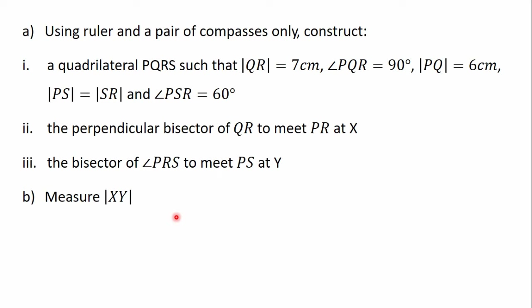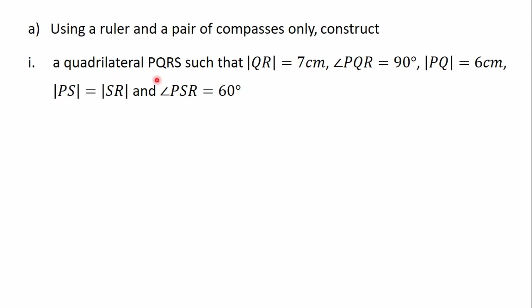To understand how to go about this construction clearly, let's begin by making a freehand sketch of the quadrilateral. We have been given all this information about the quadrilateral PQRS. We have learned that you have to select one of the sides to be the base. I am going to select the side PQ to be the base, so the side PQ with length six centimeters will be my base.